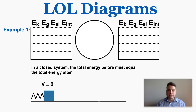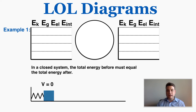For the first few examples, keep in mind that in a closed energy system the total energy must be the same before and after. Let's say we have a box compressing a spring that is not moving. Because this box has no velocity and no height but it's compressing a spring, the only type of energy present right now is elastic potential energy. LOL diagrams are commonly used to qualitatively describe energy situations, meaning describing the types of energy present without necessarily using specific numbers.